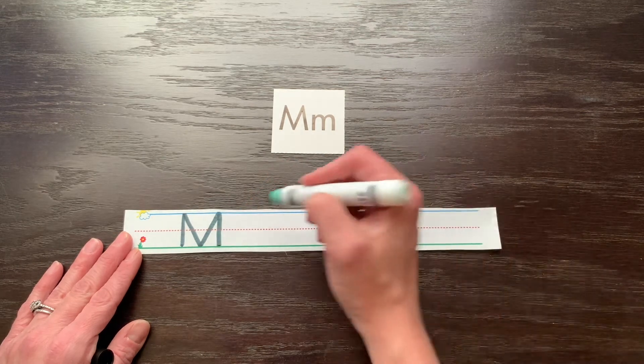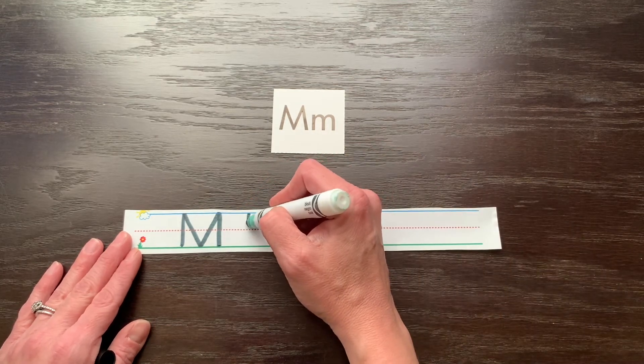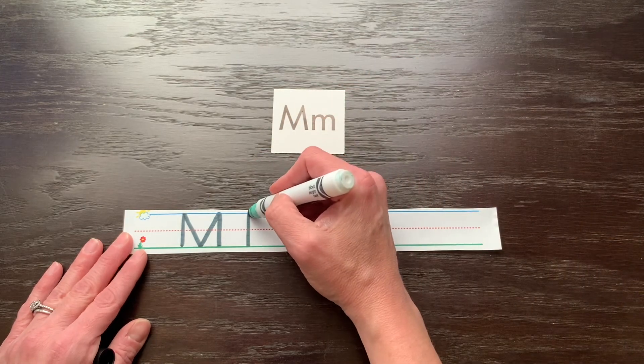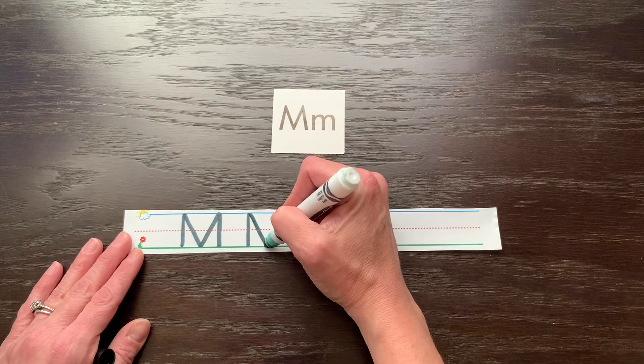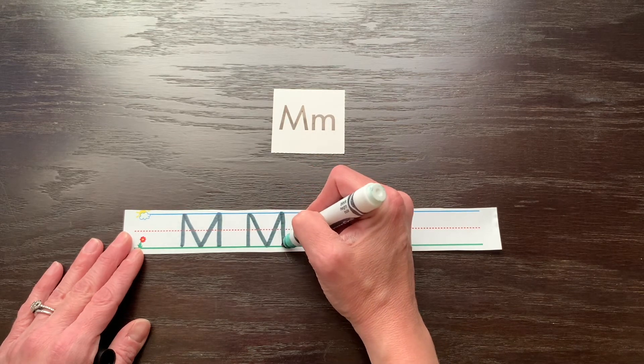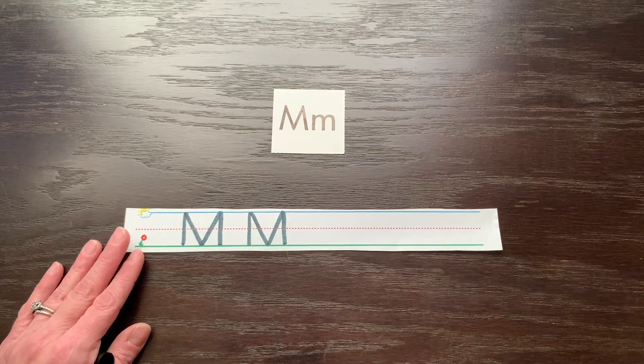Let me show you that again. Start at the top. Make the big line drop. Pick your pencil up and frog jump back to the top. Slide to the ground. Climb the mountain. Big line all the way down. Very good Little Sprouts!